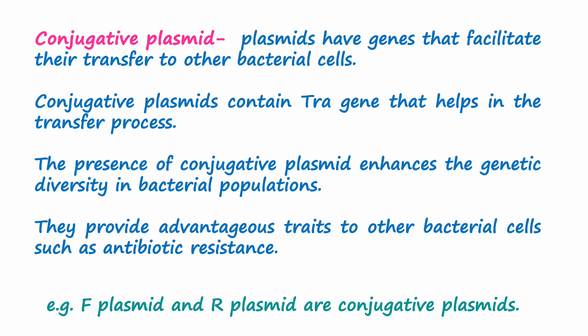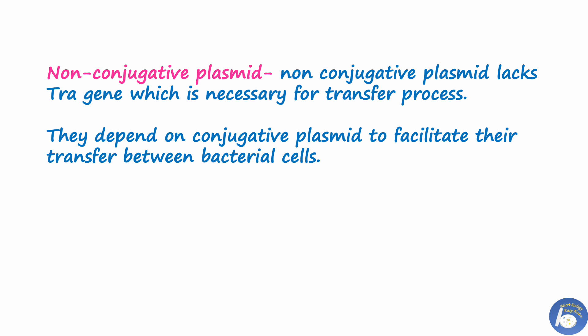Non-conjugative plasmid: non-conjugative plasmids lack the tra gene, which is necessary for the transfer process. They depend on conjugative plasmids to facilitate their transfer between bacterial cells. An example of a non-conjugative plasmid is the colicin plasmid.